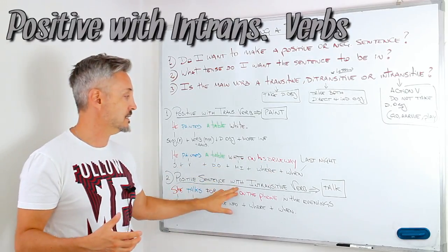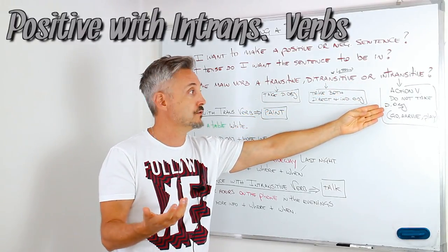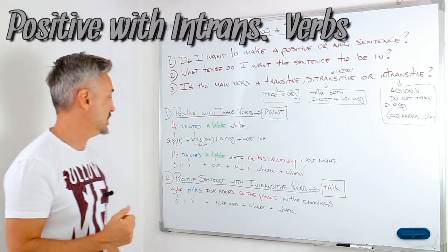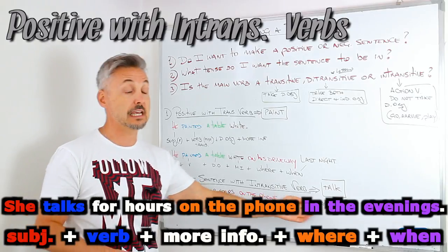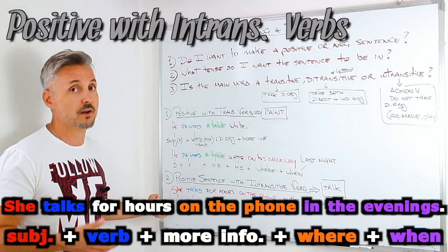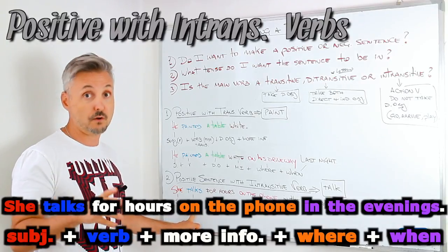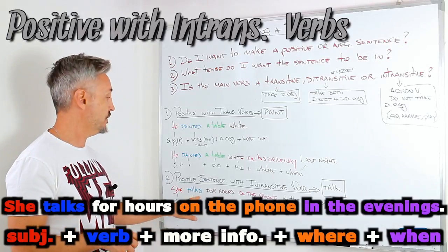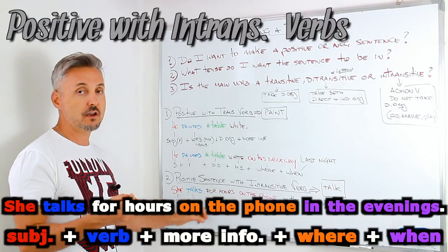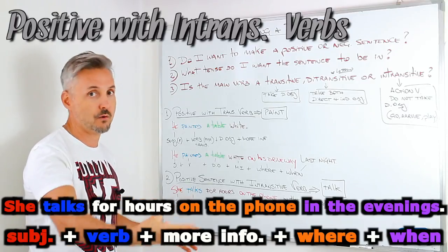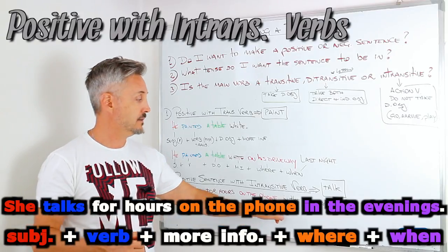Let's look at a positive sentence with an intransitive verb — in this case I chose the verb to talk. Intransitive verbs are action verbs and they don't take a direct object. The example: she talks for hours on the phone in the evenings. She is the subject, personal pronoun. We have the verb to talk in the present simple, third person singular, so we add -s at the end. Then for hours — more info related to the verb. On the phone — where. And in the evenings — when.